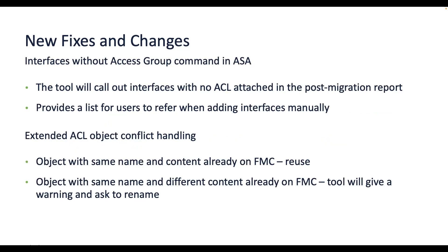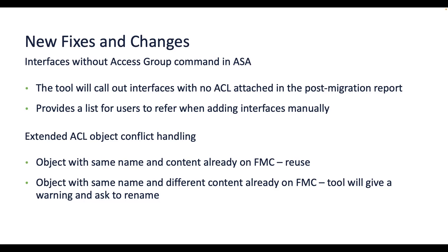The tool now lists the interfaces in ASA that do not have any ACL attached to them, so the report can be referred to in order to add the required interfaces in the access rule as per requirement. Extended ACL object conflict handling is now supported, reusing objects with the same name and content and asking the user to rename if the content does not match.